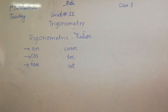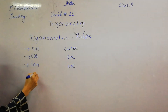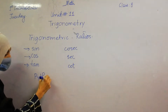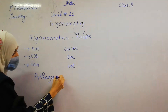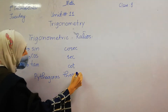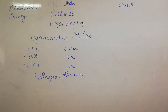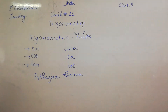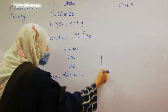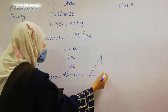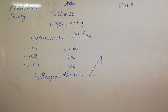We have revised the Pythagorean theorem. The Pythagorean theorem is used to find the missing sides of the triangle. The triangle should be a right angle triangle. The Pythagorean theorem is only applicable on a right angle triangle.